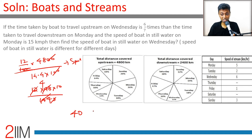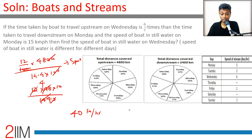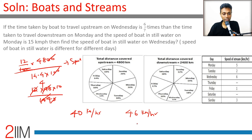The upstream speed on Wednesday is 40 kilometers per hour. The stream speed is 6 km/h, so the still water speed on Wednesday is 40 plus 6 = 46 kilometers per hour. Compared to Monday's 15 km/h, the boat has wildly varying speeds. The answer is 46 kilometers per hour for still water speed on Wednesday.